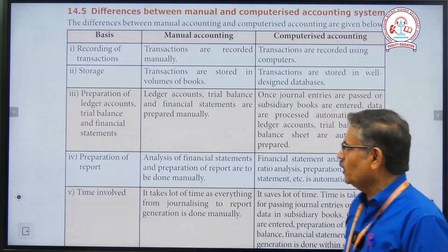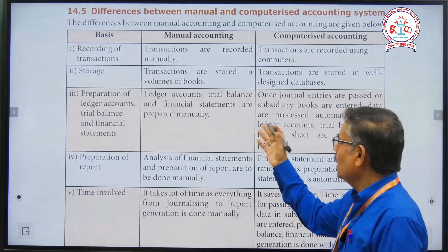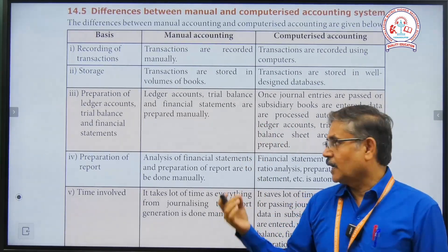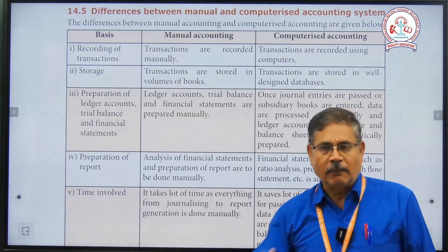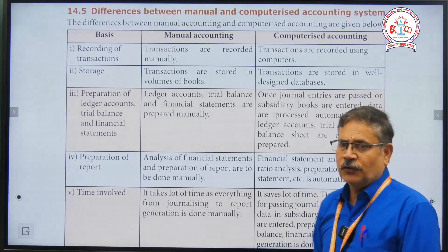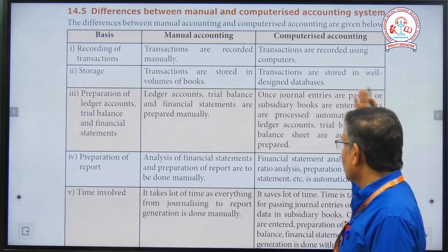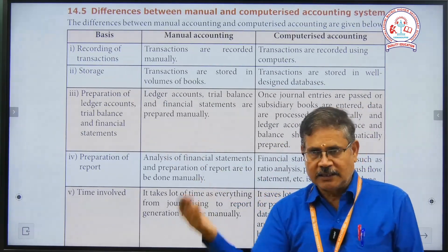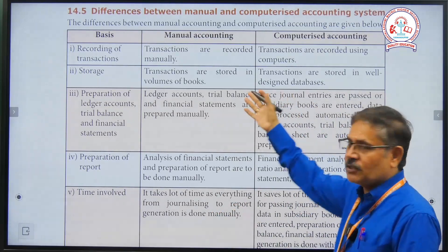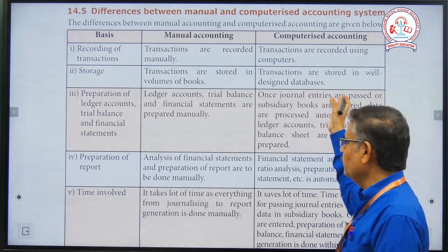The third point is preparation of ledger account, trial balance, and financial statements. In the manual system, we prepare these based on journal, ledger, and trial balance, and then manually prepare the final accounts. But in the computerized system, once you enter the journal entries and subsidiary books, they are automatically processed and move to the ledger account, trading and profit account, and balance sheet — the values appear properly.